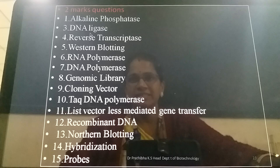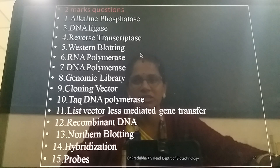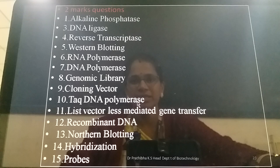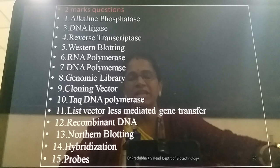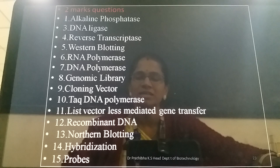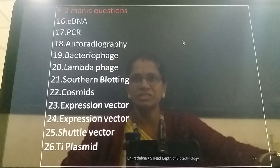First question onwards, the 2-mark questions include: Alkaline Phosphatase, DNA ligase, reverse transcriptase, western blotting, RNA polymerase, DNA polymerase, genomic library, cloning vector, Taq DNA polymerase, vectorless mediated gene transfer, recombinant DNA, northern blotting, hybridization, and probes. For 2-mark answers, you need to provide a definition and one example if applicable, and mention different types if relevant.